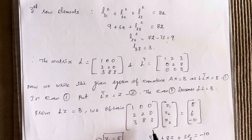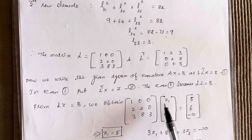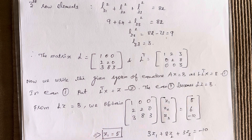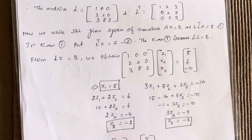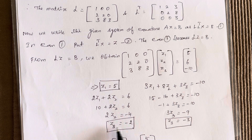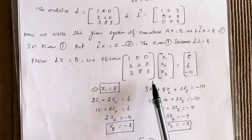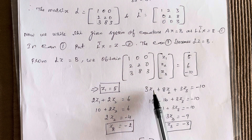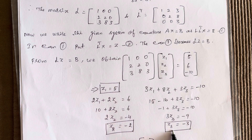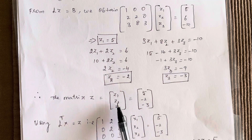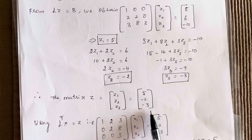Using forward substitution: Z1 equals 5. Next, 2Z1 plus 2Z2 equals 6, giving 10 plus 2Z2 equals 6, so Z2 equals minus 2. Then 3Z1 plus 8Z2 plus 3Z3 equals minus 10; substituting Z1 and Z2 gives Z3 equals minus 3. So the matrix Z equals [5, minus 2, minus 3].